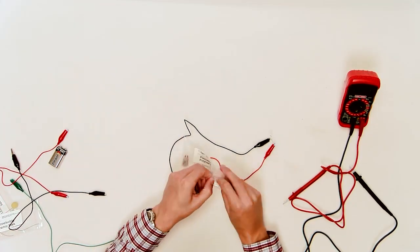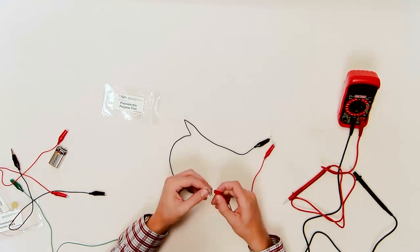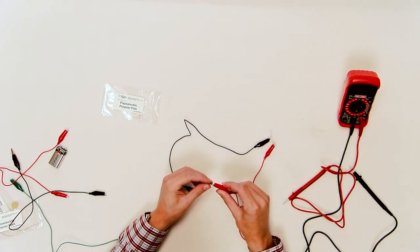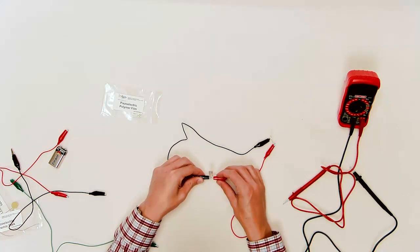Connect one LED to a piezoelectric polymer film so that one wire of the LED is connected to one leg of the film and the other wire on the LED is connected to the other leg of the film. Use the supplied alligator clips to make these connections.